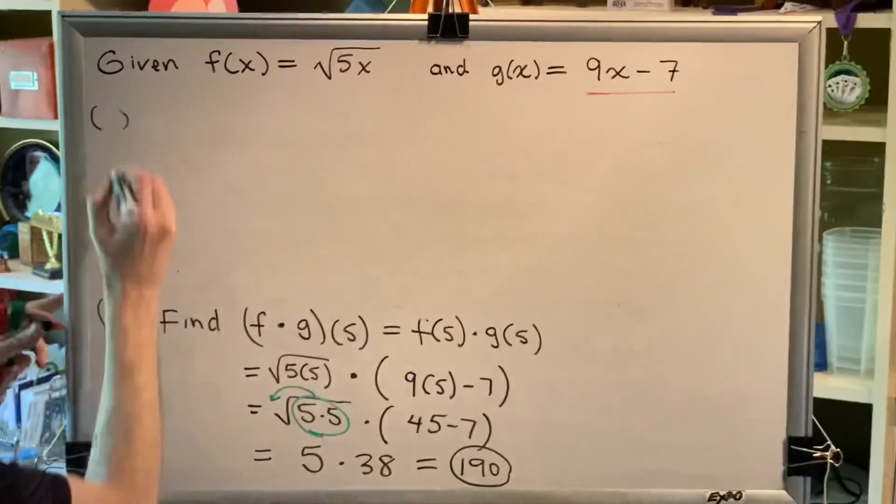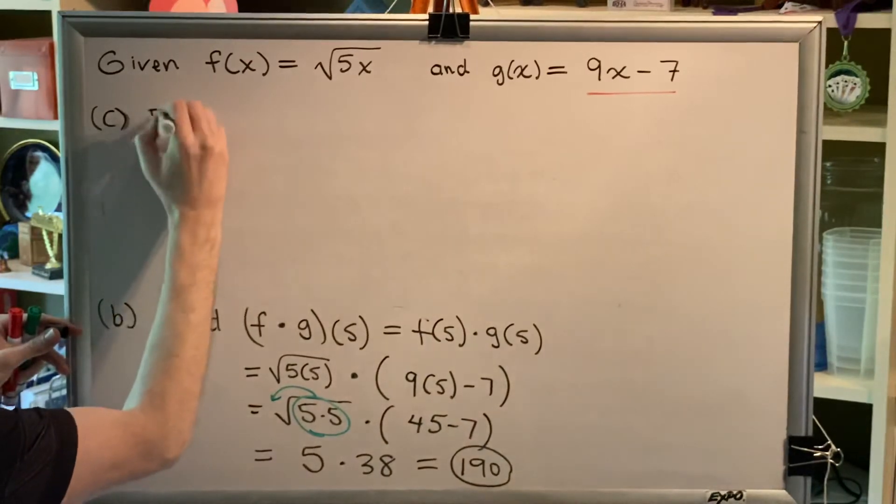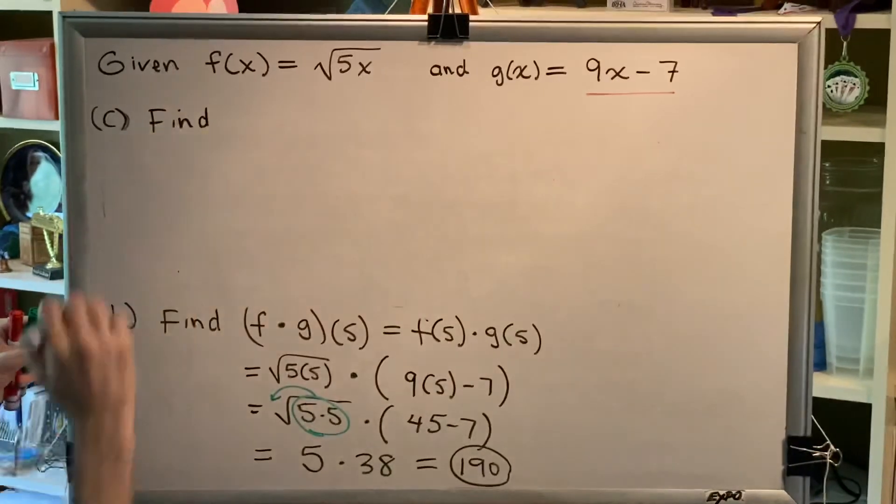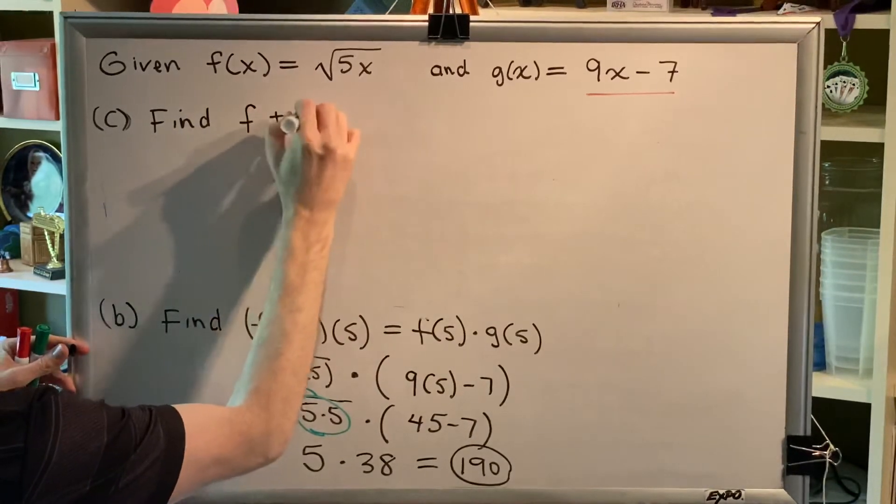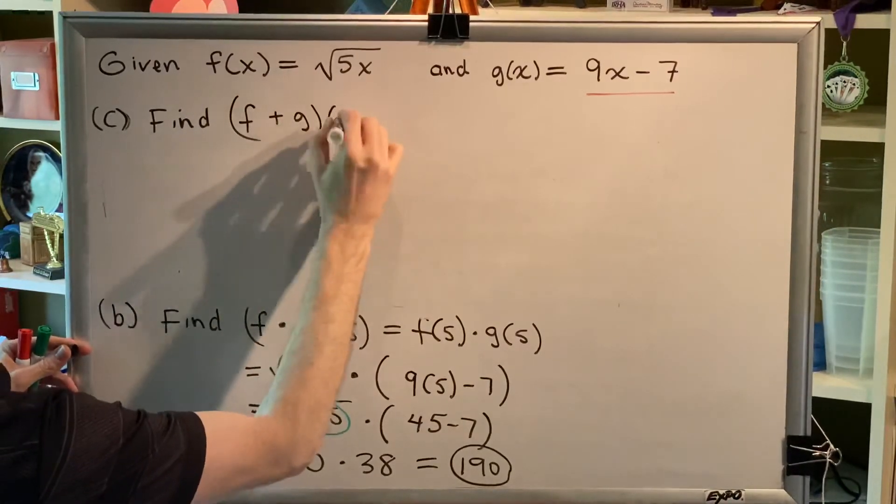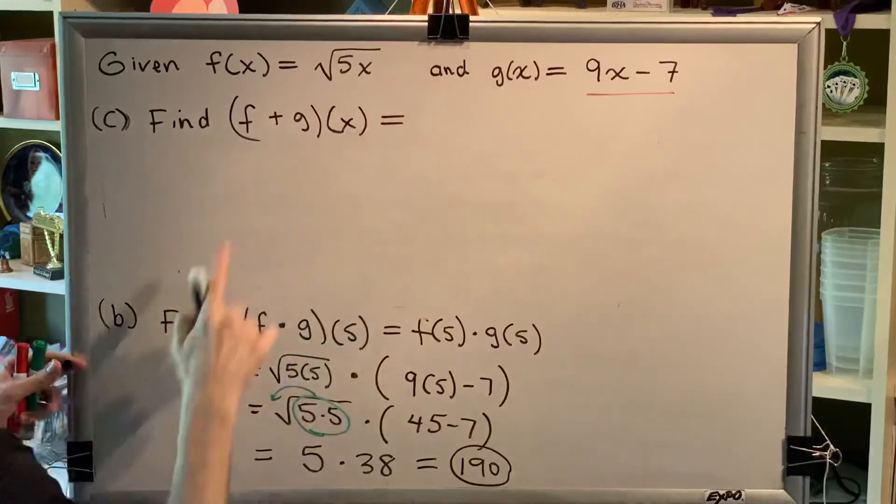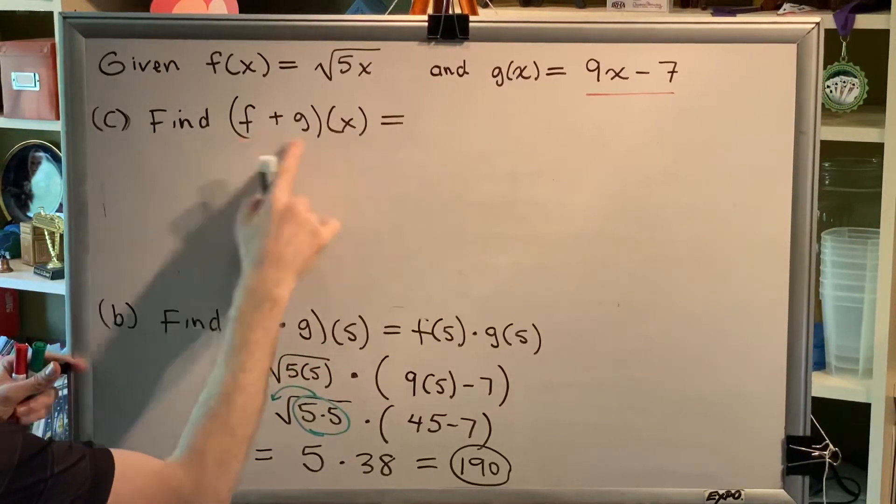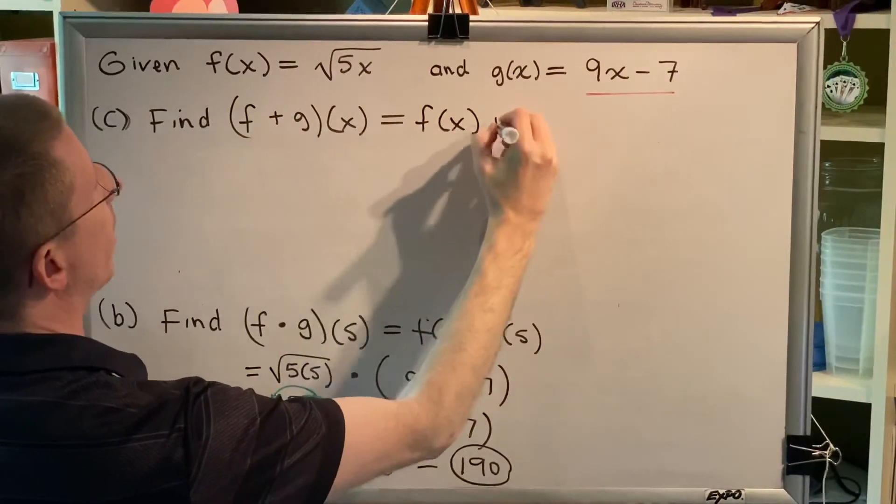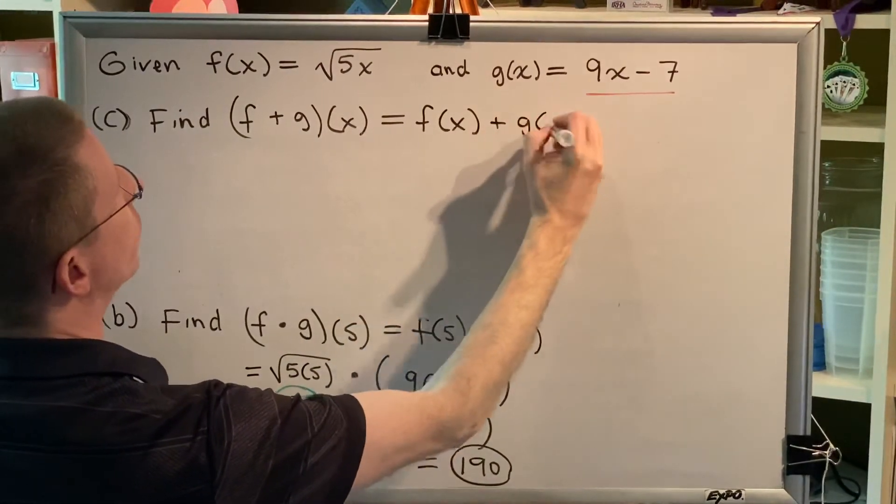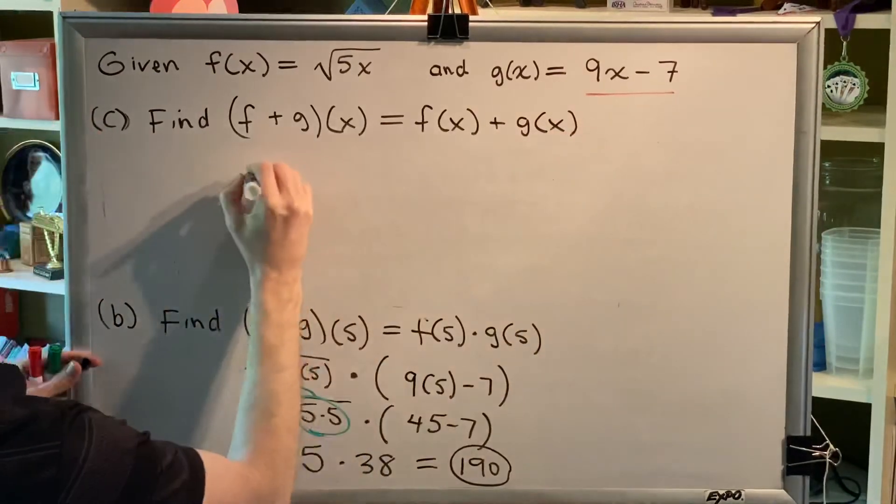Part C. Find (f + g)(x). Alright. Well, this name means that we took two functions, f and g, and added them together. In other words, this is the same thing as saying f(x) plus g(x).